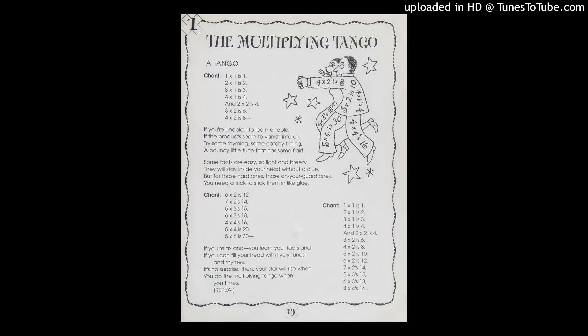1 times 1 is 1, 2 times 1 is 2, 3 times 1 is 3, 4 times 1 is 4, and 2 times 2 is 4, 3 times 2 is 6, 4 times 2 is 8, 5 times 2 is 10, 6 times 2 is 12, 7 times 2 is 14.